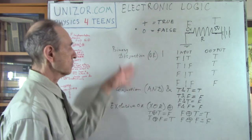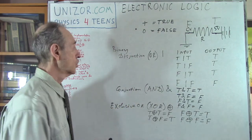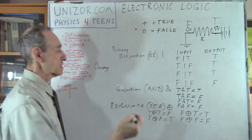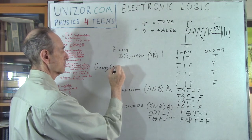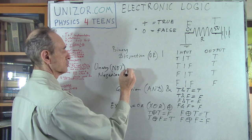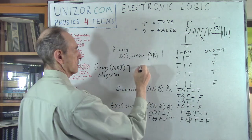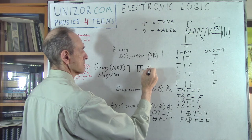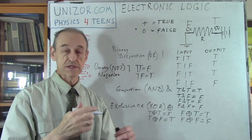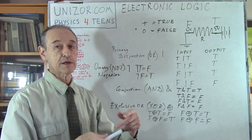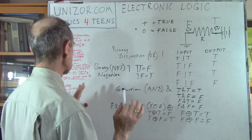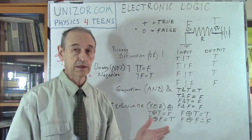Now there is one unary operation — unary means there is only one argument. It's called negation, or NOT. The symbol is like a bar over the value. NOT true gives false, and NOT false gives true. We're just reversing the signal: if it was zero we make it positive, if it's positive we make it zero. All this is supposed to be implemented in an electronic schema.